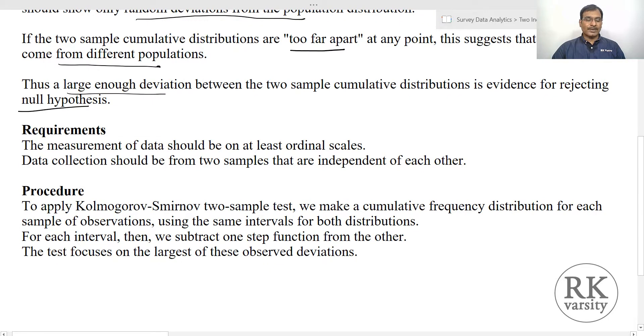To perform the KS test, the measurement of data should be at least on an ordinal scale. When we say at least ordinal scale, we exclude nominal scale. We can start with ordinal scale, then use interval scale or ratio scale. Data collection should be from two samples that are independent of each other.